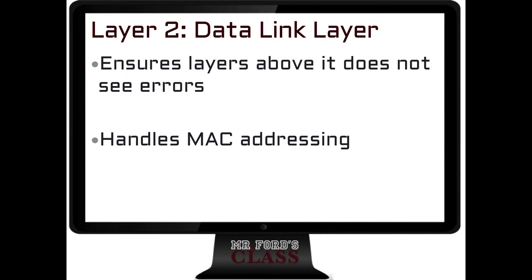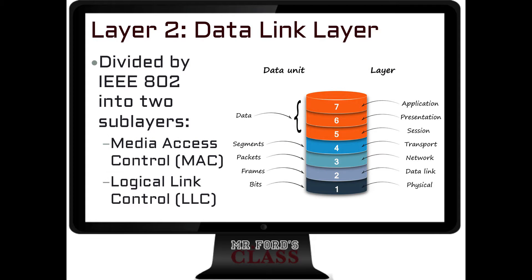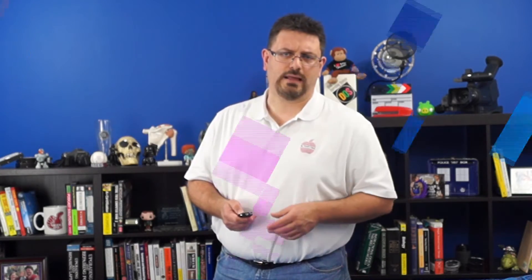The data link layer also handles something called a MAC address. It's divided by the IEEE 802 standard into two sub-layers. You need to know not just layer 2 but also be aware of sub-layers when present. In this case, the IEEE 802 divides layer 2 into a media access control layer — the MAC — as well as something called the logical link control, or LLC.